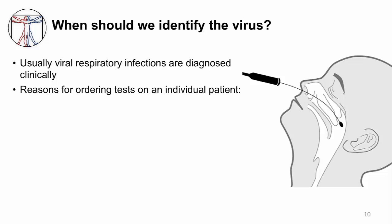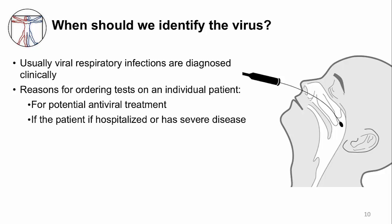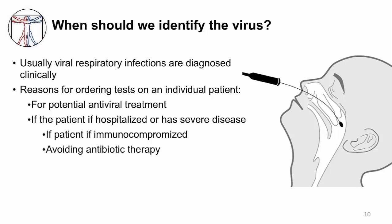Here are some reasons for ordering tests on an individual patient. For example, you may choose to give antiviral therapy for a patient with influenza. Or if the patient is hospitalized or has severe disease, you'll likely want to know why the patient is so sick. For immunocompromised patients, you may want to give experimental antiviral therapy. In some patients, you could avoid empiric antibiotic therapy. Another reason is to place all patients with respiratory virus infections in the same area of the hospital — this is called cohorting — which decreases the chance of spread of the virus to other patients.